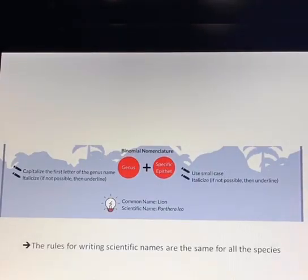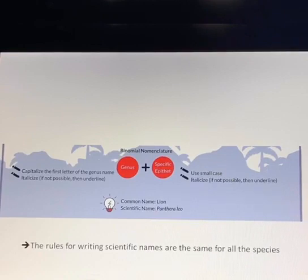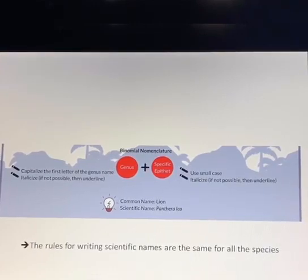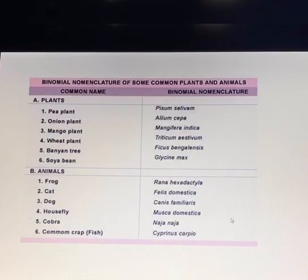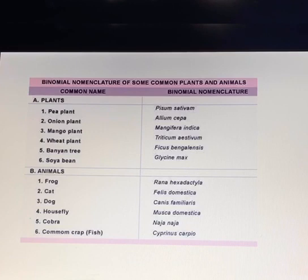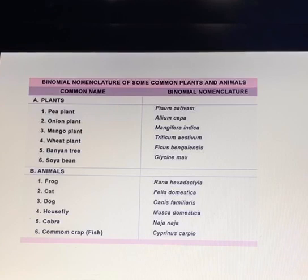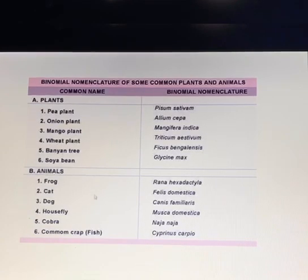By this scheme we can also repeat the rules for writing scientific names. The rules are the same for all species. You have another example here — the lion. The scientific name of the lion is Panthera leo. By knowing the scientific names of different species, we can find information according to the genus and species, which are both levels of classification for living organisms. You can see here some scientific names of common plants and animals.